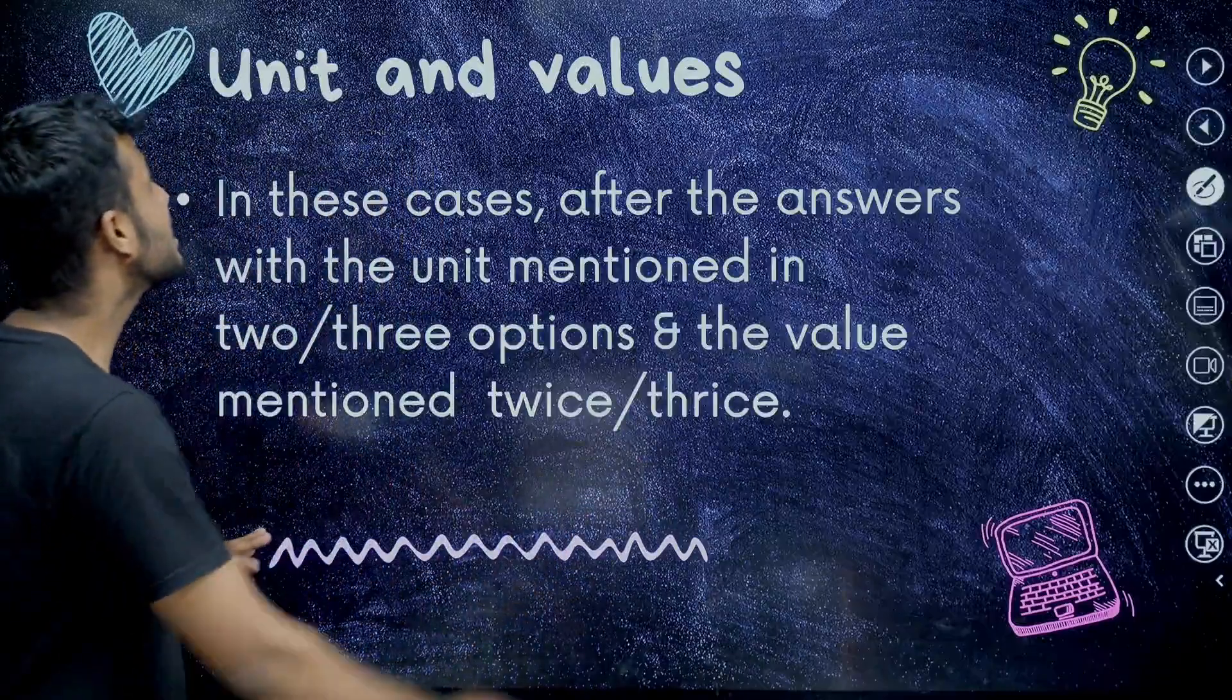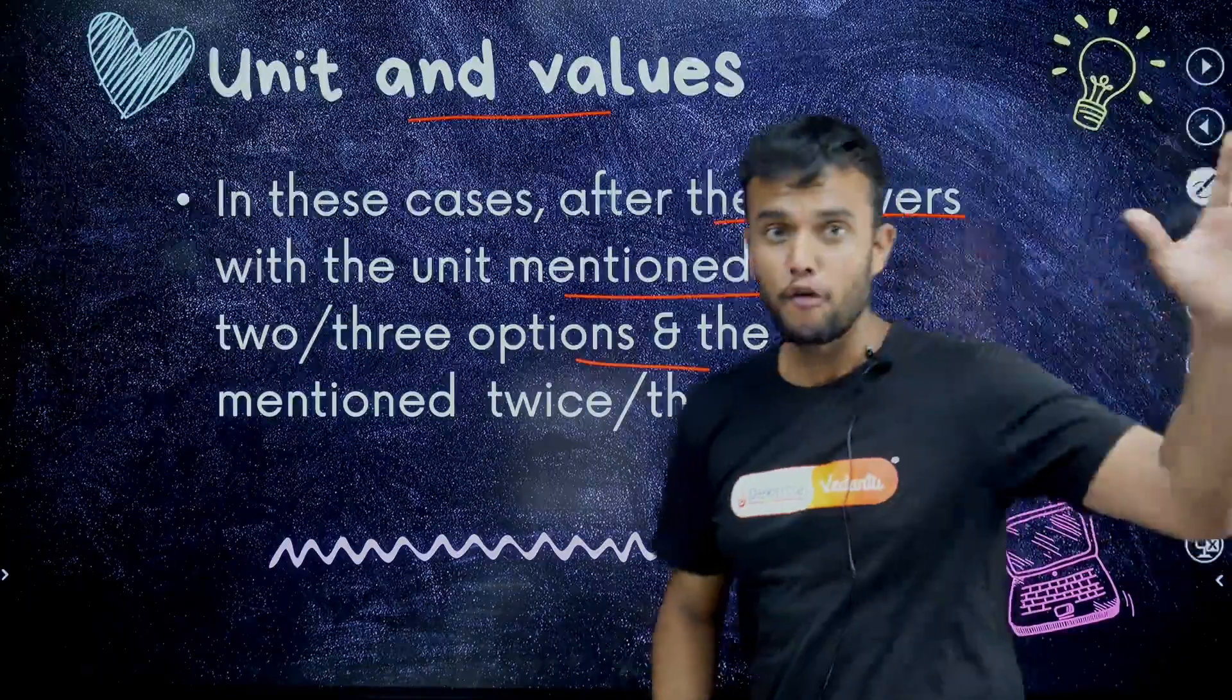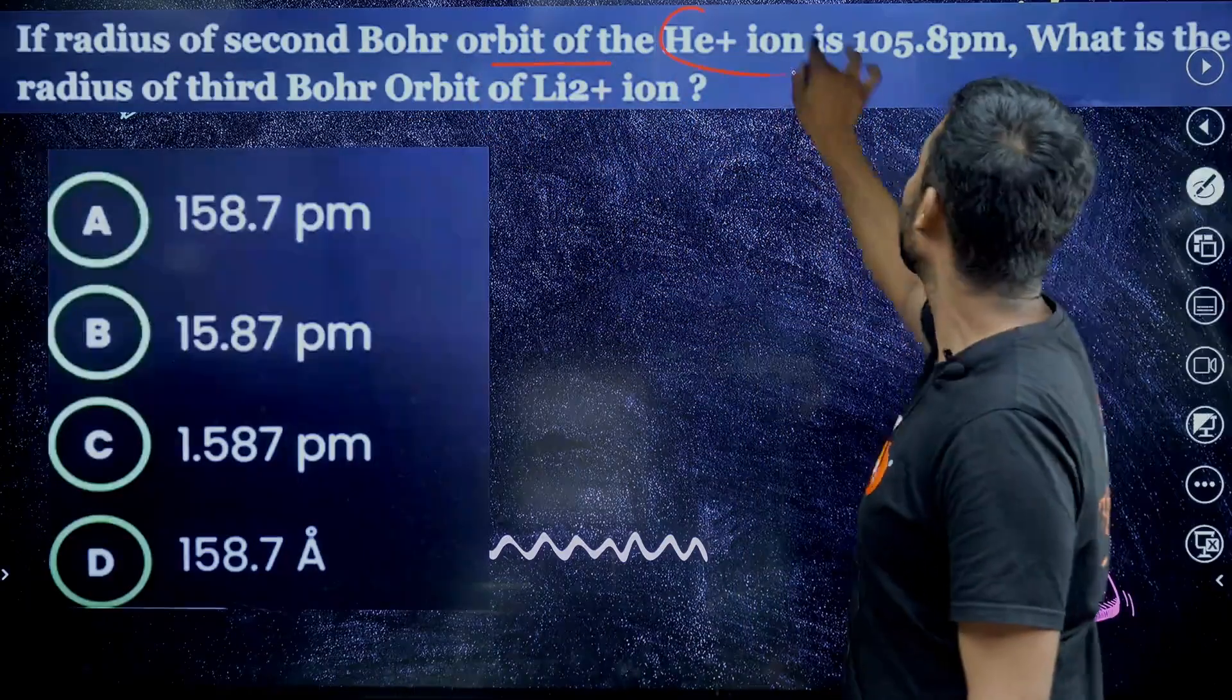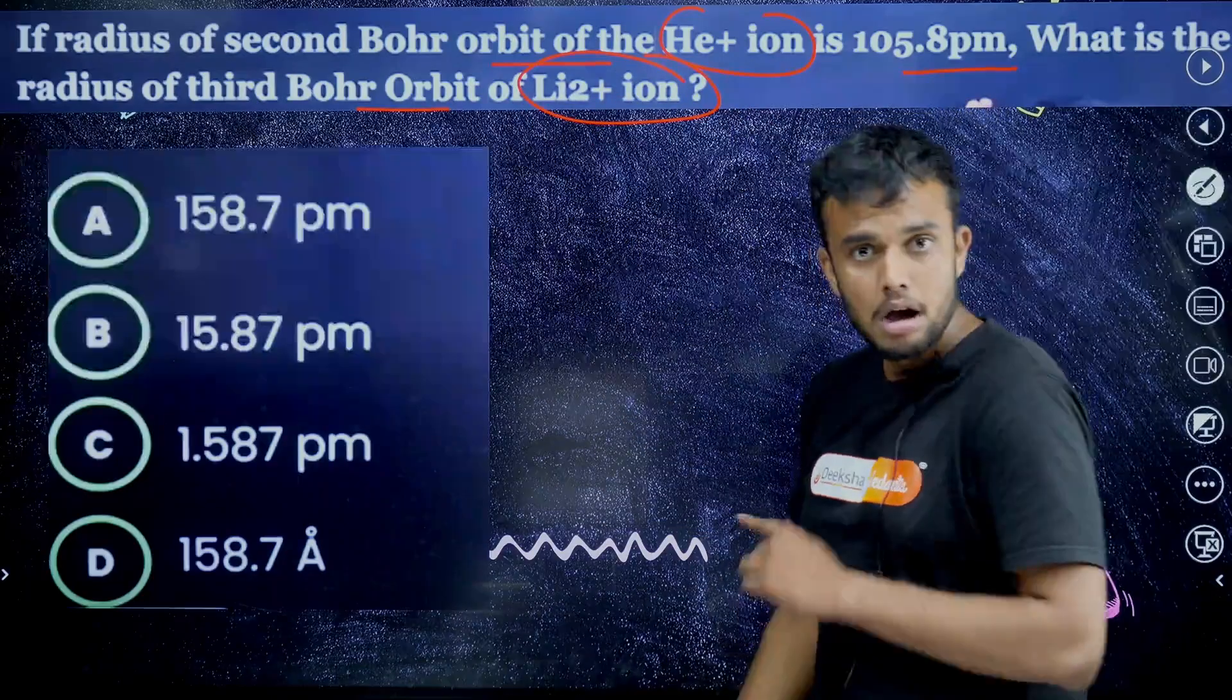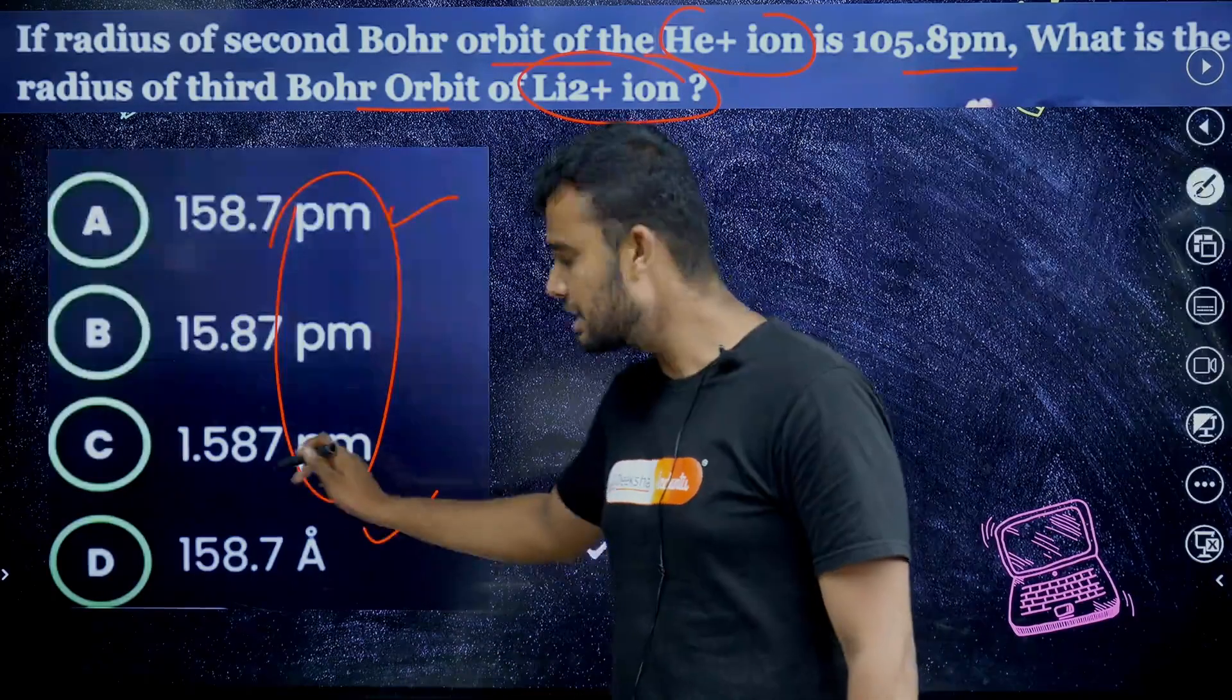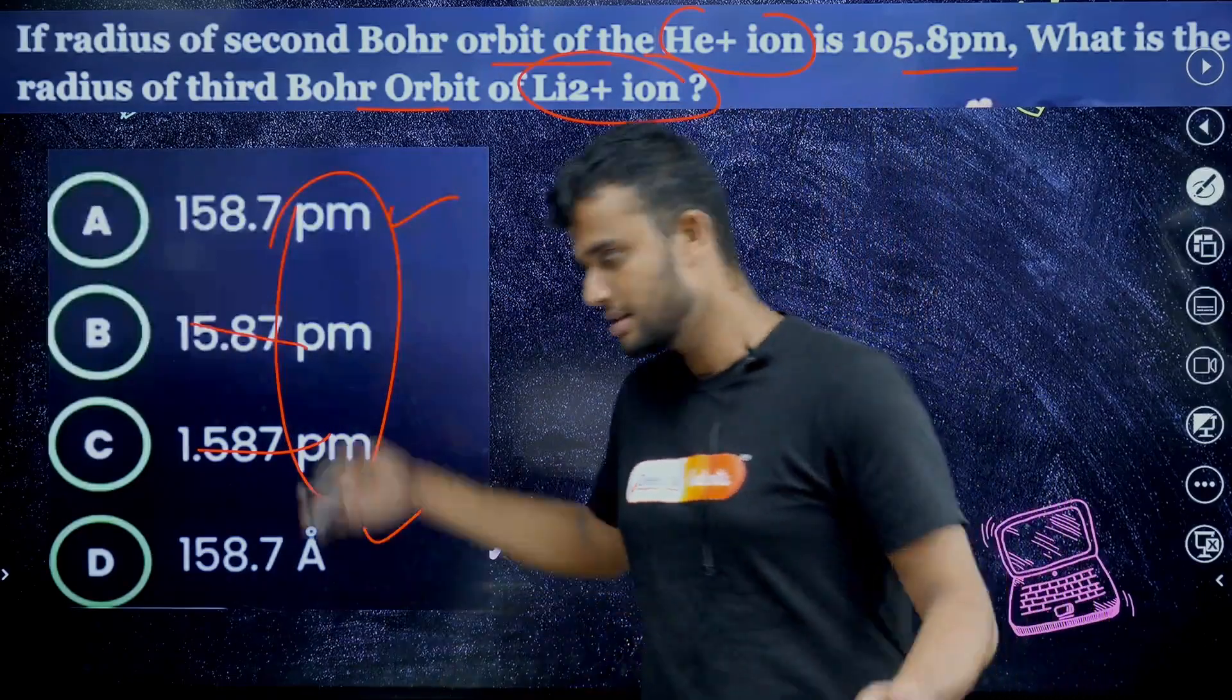Next, very important strategy: units and values. What is this? In these cases, after the answer with the unit mentioned in two or three options, and the value mentioned twice or thrice. For example, units and values are same but they different. They give different units. For example, look here. One question is there: if the radius of second Bohr orbit of helium plus ion is 105.8 PM, what is the radius of third Bohr orbit of lithium two plus ion? Students, look here. We have three same SI units. But here we have same values but units are different. What is the answer? Let me know. The answer may be these two only. The answer is either B. But the answer is PM. This is an example.